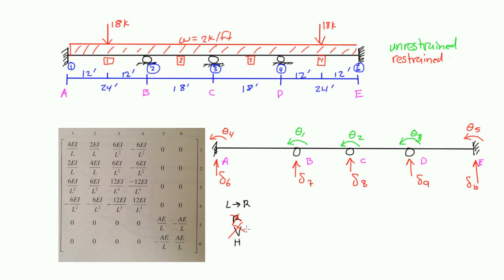Now we move on to horizontal degrees of freedom. Since this beam is only subject to vertical loading, it only supports moments and vertical reactions — there are no axial forces in this member. In real life there are probably small axial forces, but for analysis we ignore axial deformations. So we don't need to worry about horizontal degrees of freedom at all.